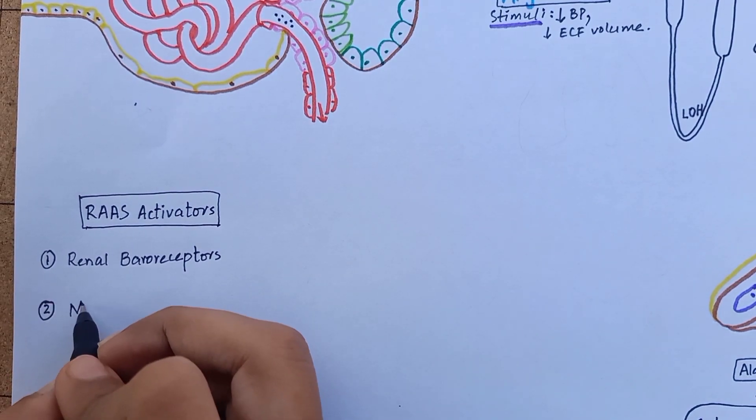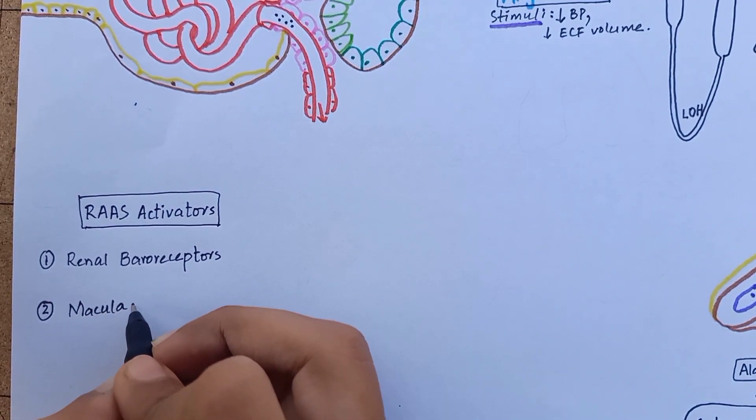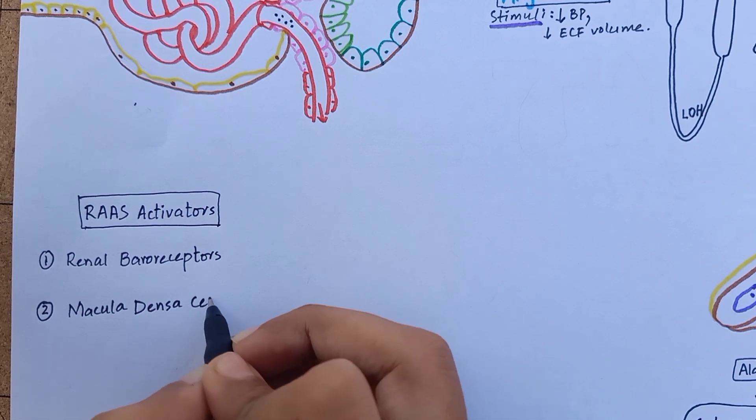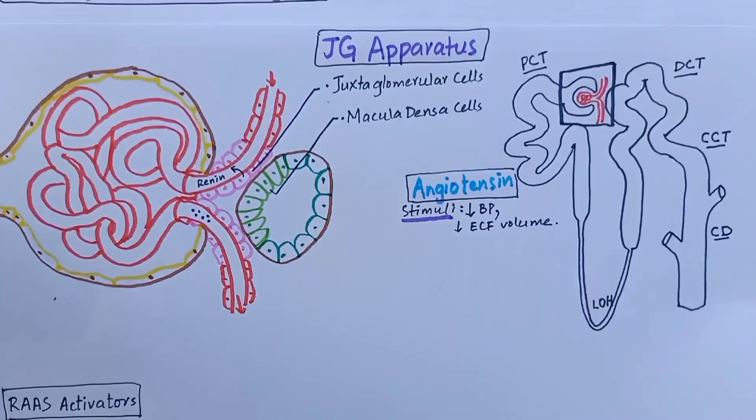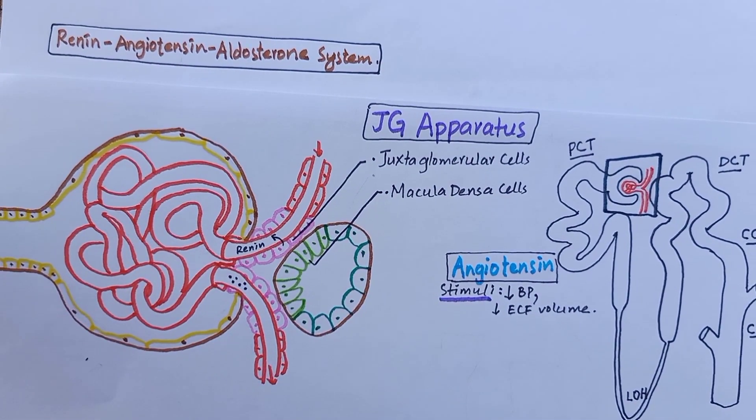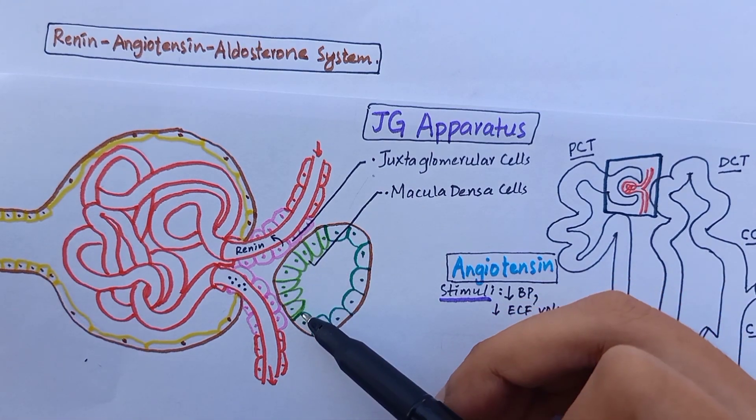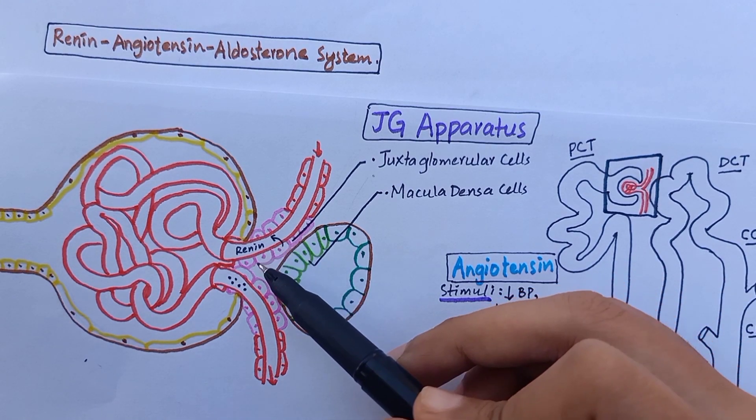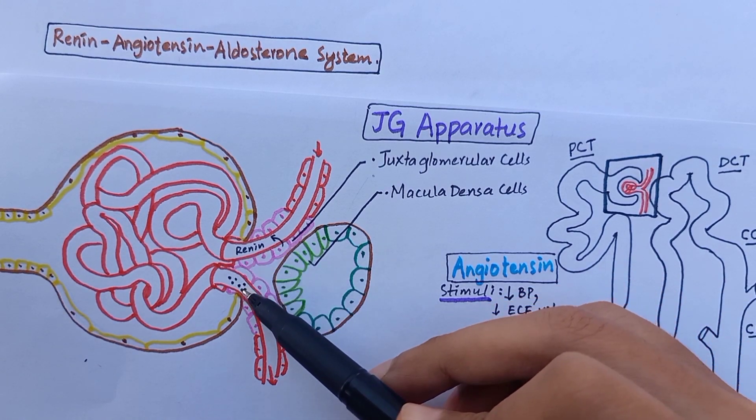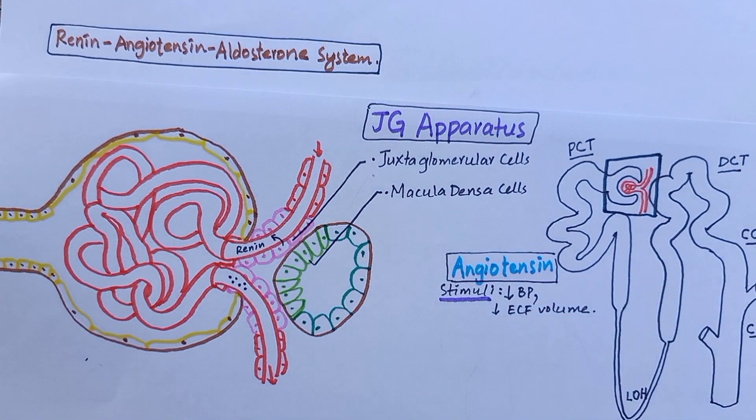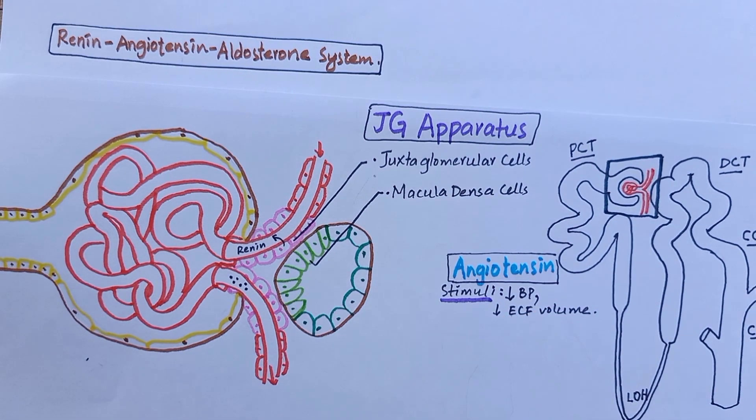The second mechanism is by macula densa cells. The macula densa cells are sort of chemoreceptors that detect changes in sodium chloride passing through distal tubule. So if there is a decrease in sodium chloride concentration, it will initiate a signal to stimulate juxtaglomerular cells to release renin.